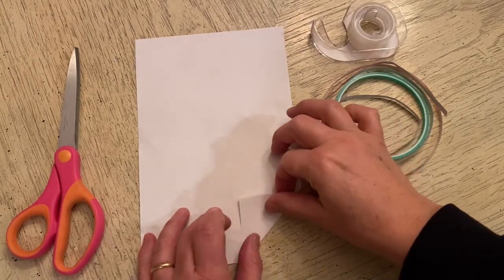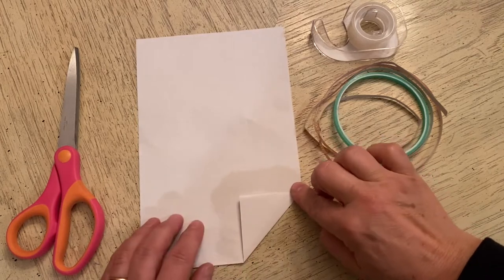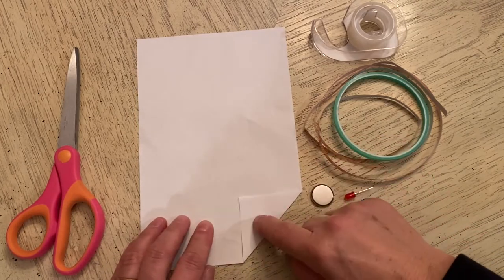The first thing you want to do is fold over one corner of the paper. This will become your switch.